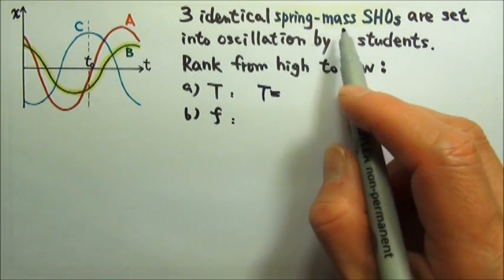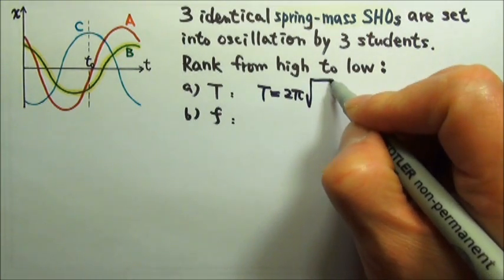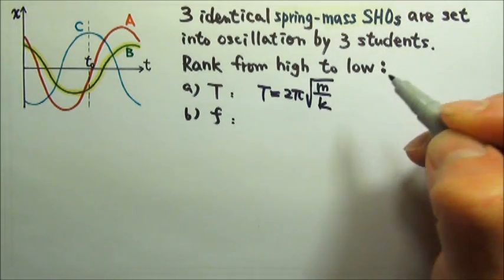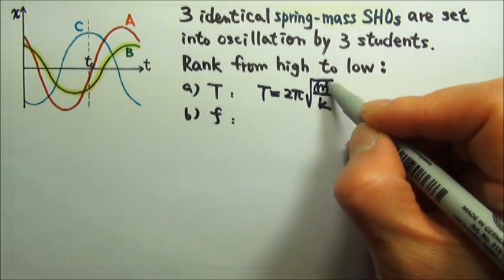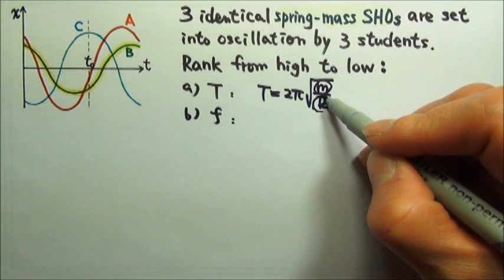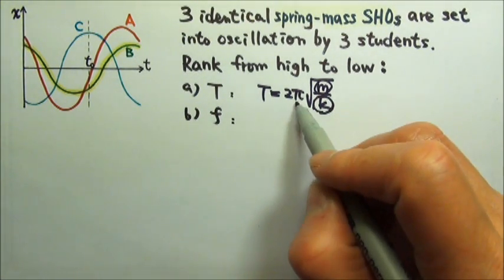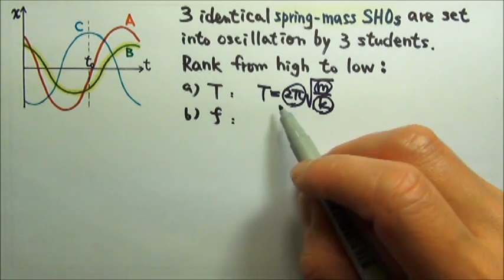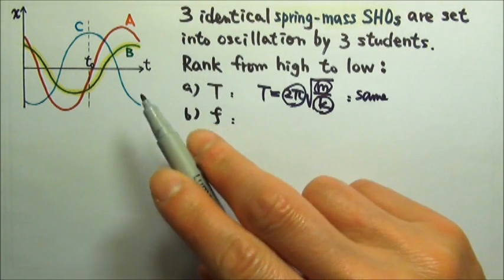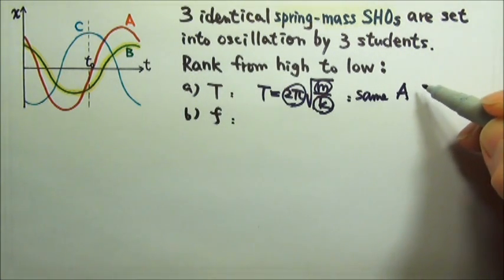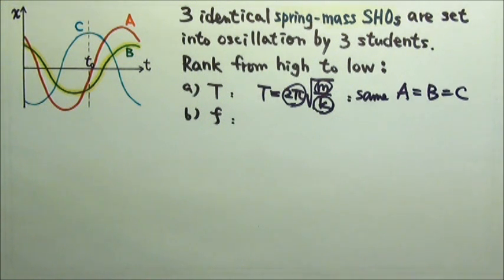The period of a spring-mass simple harmonic oscillator is T = 2π√(m/k). Since the oscillators are identical, that means they all have the same mass and they all have identical springs, so the k's are the same. And 2π is a constant, that means the period would be the same for all three of those, so the period for A and B and C, they will all be the same.